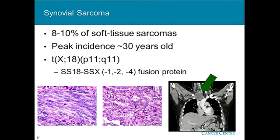Let's take a minute to talk about synovial sarcoma. This represents about 10% of our soft tissue sarcomas, with peak incidence in the late 20s and early 30s. All these tumors have an interesting translocation between chromosome 18 and chromosome X — SS18 and SSX — and the biology of this fusion protein is just starting to be worked out in the last few years. If you take this fusion protein and put it into cell lines, it will be transforming and alters transcription. But interestingly, it doesn't bind DNA.